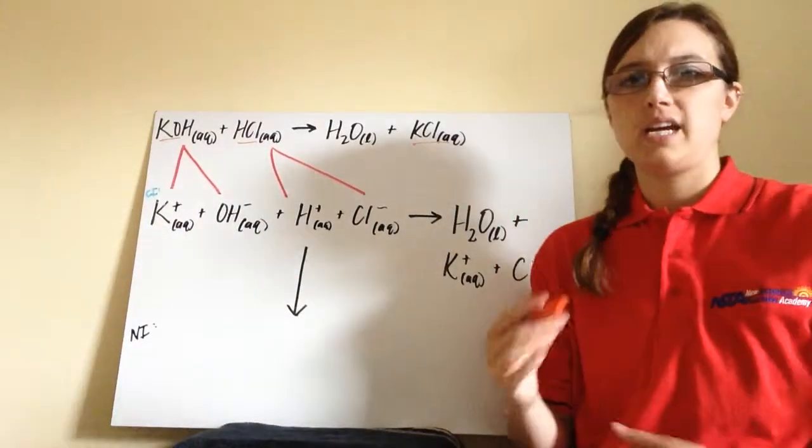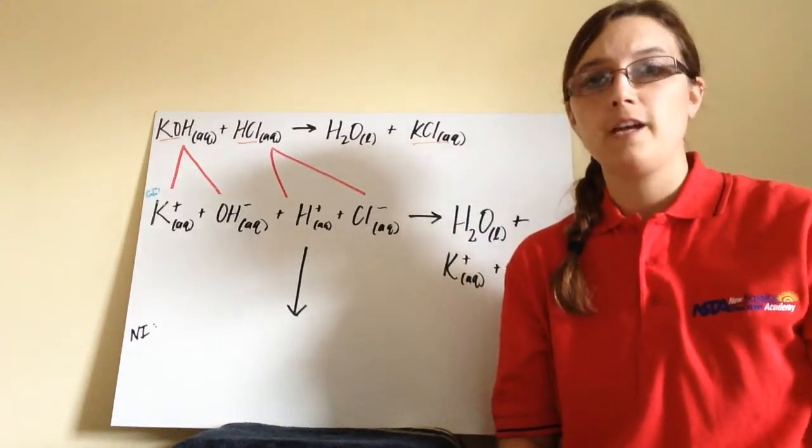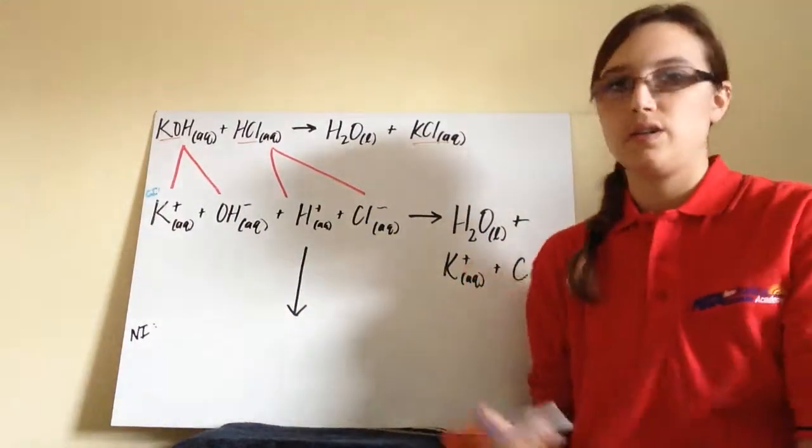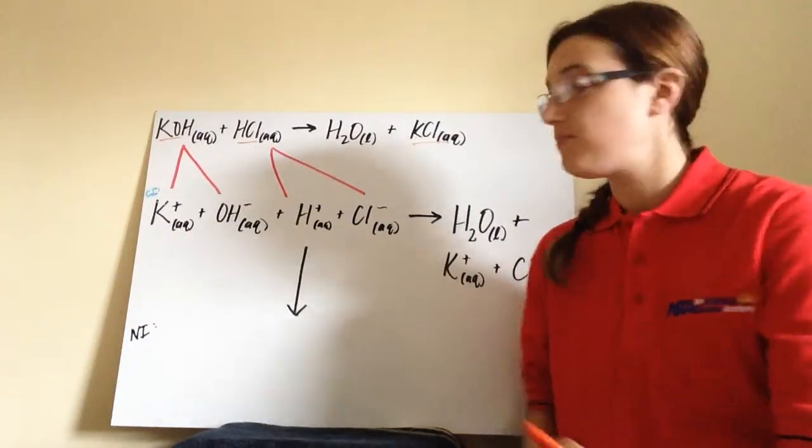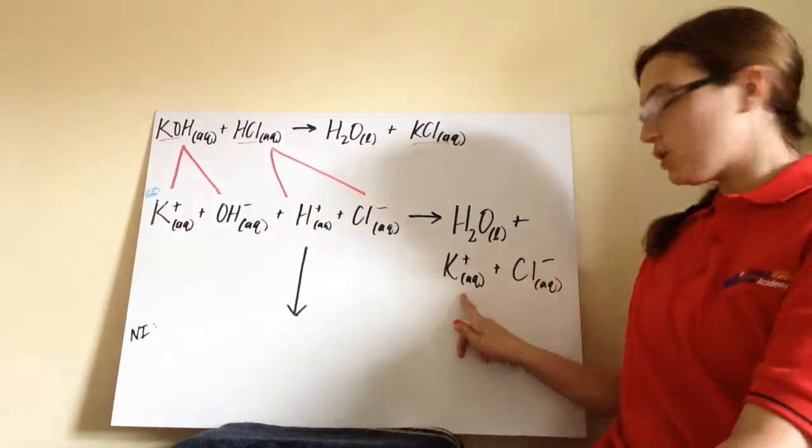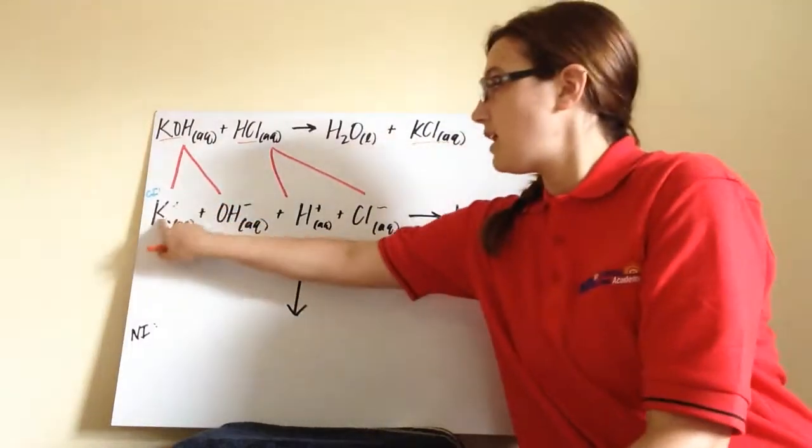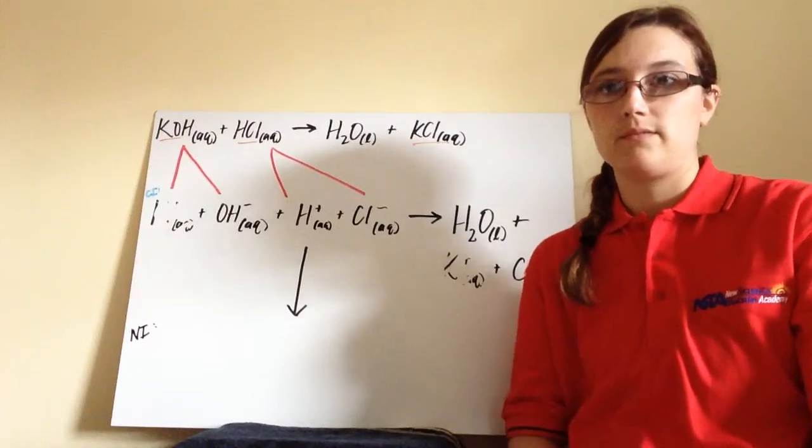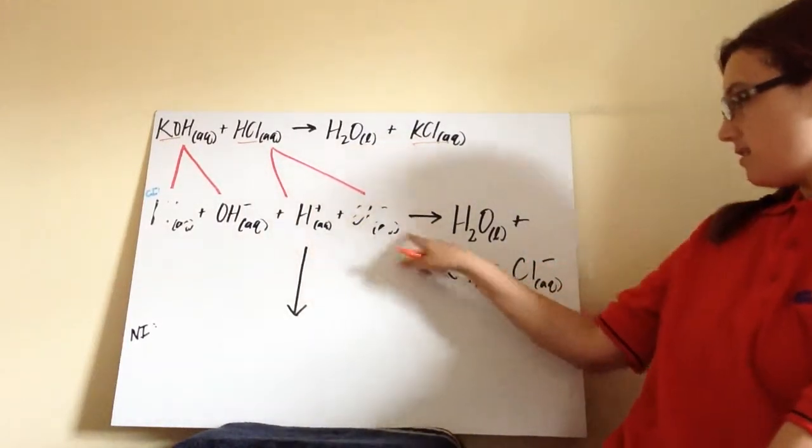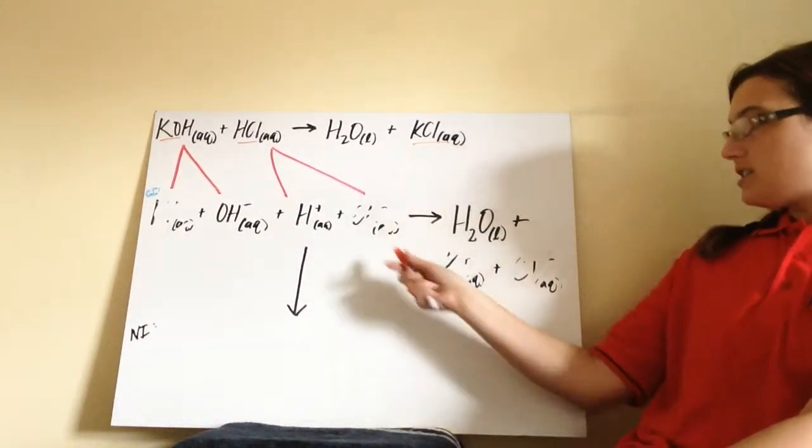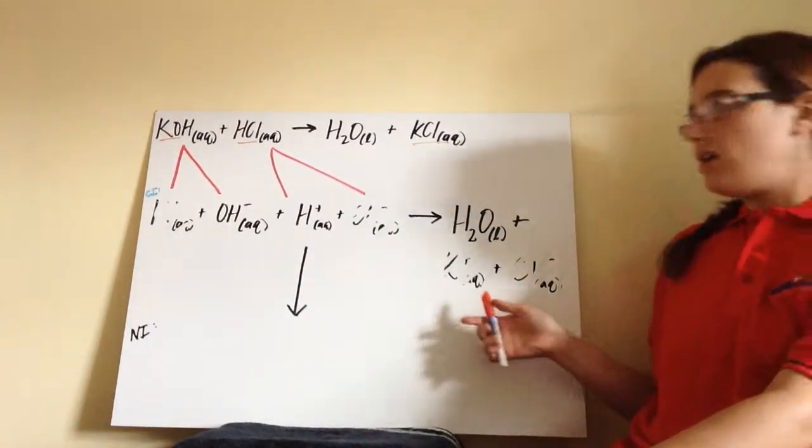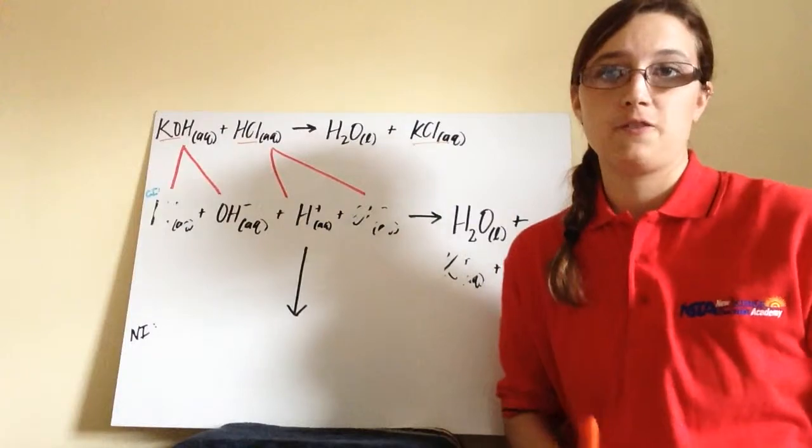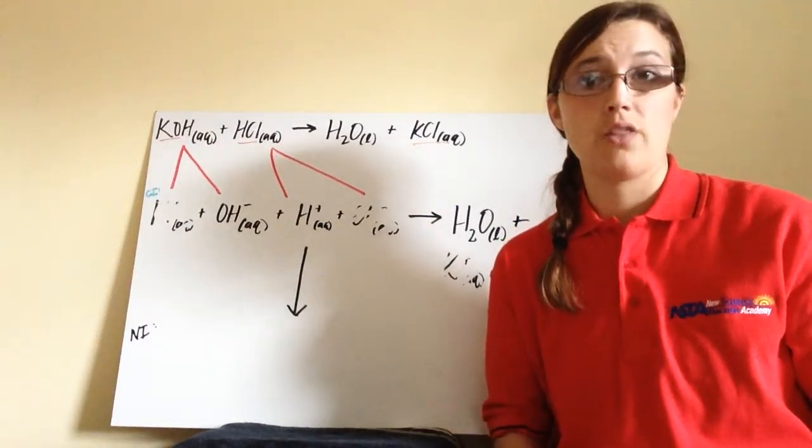And so what we're going to do is take a look at this complete ionic equation and figure out if there's anything that we can cancel out. So when you look at this, you should notice that you have ions that are the same on the left and on the right. Well, on the left we have K-plus, on the right we have K-plus. I'm going to cancel this out. Anything else that we could cancel out? Cl-minus. So what we just did is we just canceled out the chloride ions. What we just canceled out were our spectator ions. Our spectators were the ones that were the same on the left and the right. They didn't participate in this reaction at all. They stayed as ions.